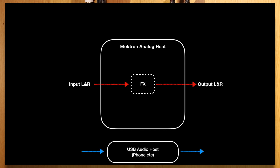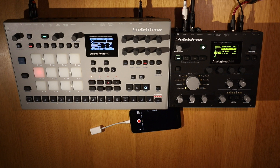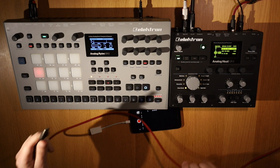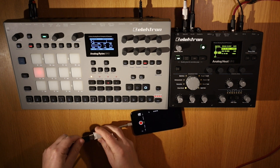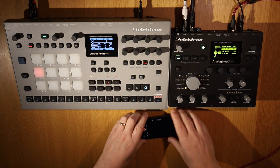If we then add a USB class compliant host to this, we have these blue arrows, meaning stereo digital audio. In insert mode we're able to simultaneously send audio from the host to be processed by the heat, as well as getting processed audio back into the host. Here I'm going to do an example of this — to film an Analog Rytm and Heat jam into the iPhone's camera, where the heat is the last unit in the chain.